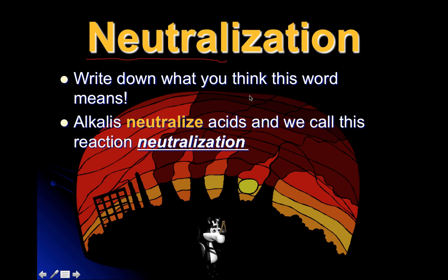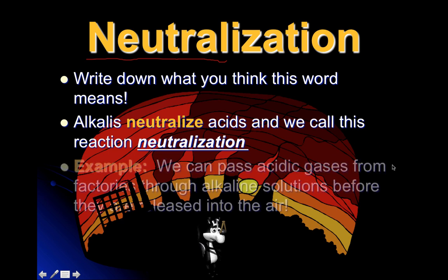Acids and alkalis can neutralize each other — it's almost like mixing colors. If you have a substance that's really strongly acidic and you mix in something that's really alkaline at just the right level, you might be able to neutralize it. We can use this to our advantage: factories produce a lot of acidic materials that go into the atmosphere, causing pollution and even acid rain. But if you understand how neutralization works, you can pass those gases through something really alkaline to neutralize them and lessen the damage to the atmosphere.